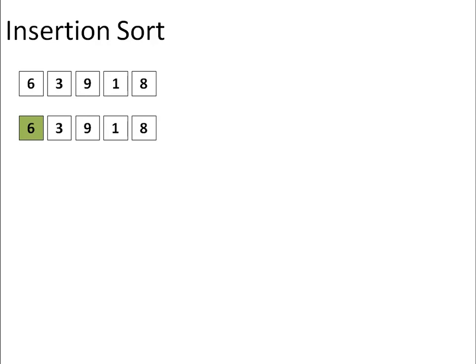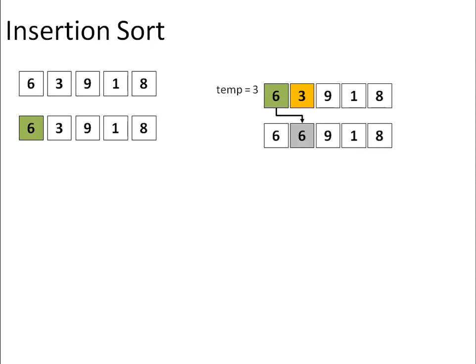So we start with the second element. Here, we have 6 in the sorted list and element 3 has to be inserted at its correct position. We store 3 somewhere and compare 6 with 3. As 6 is greater than 3, so 6 will be shifted ahead by one position.